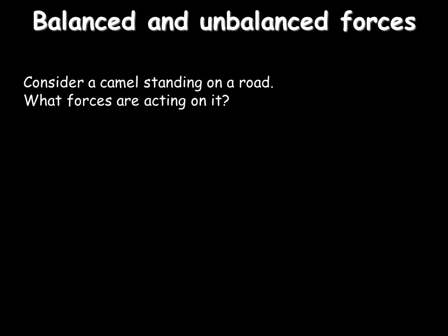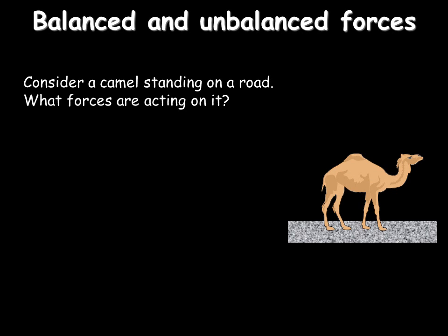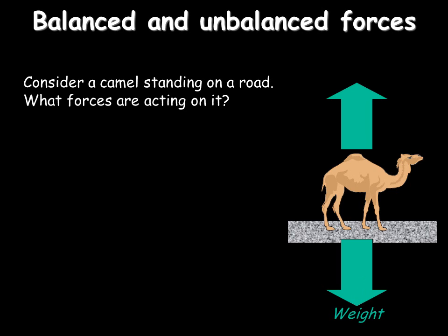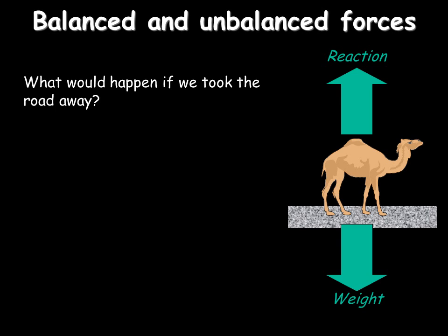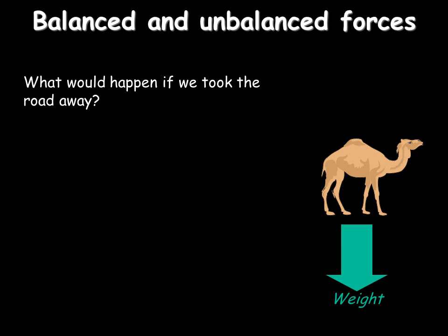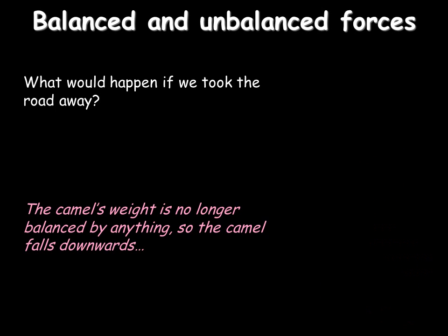Let's consider some forces. Let's pick a camel standing on a road. Here's a camel standing on a road. Like everything on Earth, it has weight. It has a force acting downwards due to gravity. It would fall down if it wasn't for the road pushing back a reaction, which is a force which acts in exactly the opposite direction with the same force. It means the camel stays still. What would happen then if the road was taken away? If that reaction wasn't there? Well, the camel would fall downwards. It would free fall downwards because there's nothing to stop it falling.